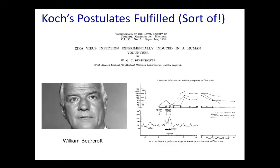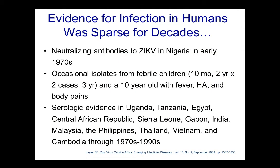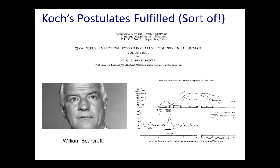In a remarkable experiment published a few years later by William Bearcroft, mouse brain homogenates were used to inoculate a volunteer, who then developed a febrile ailment with fever and other signs and symptoms of illness — the first isolation of Zika virus infection in a human. The subject was actually Dr. Bearcroft himself. I'm not sure that IRBs or human subjects committees would allow this sort of experiment today.